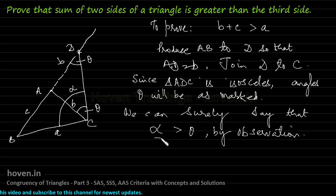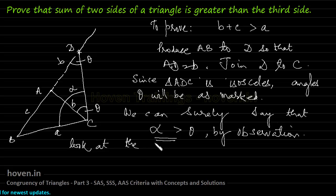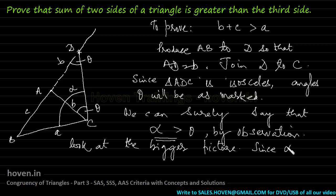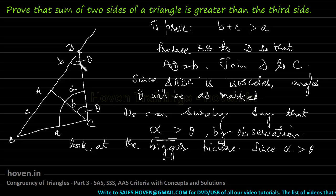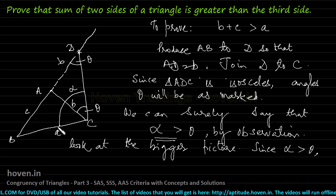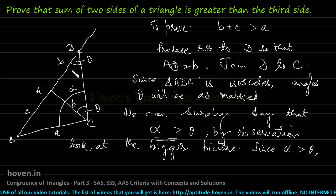Obviously, if we increase angle theta, only then will it become equal to alpha. Therefore, this is a plain observation that alpha is more than theta. Now, look at the bigger picture — that is, in triangle BDC, this entire big triangle. Since alpha is more than theta, and we have already proved in our previous lecture that the side opposite to a greater angle is longer than the side opposite to a smaller angle.